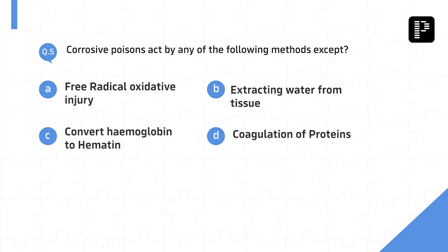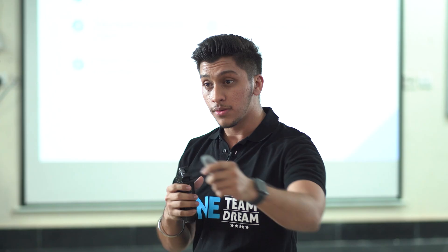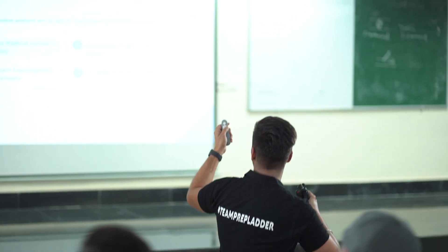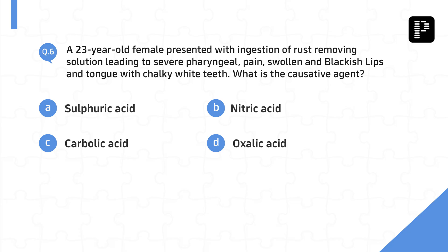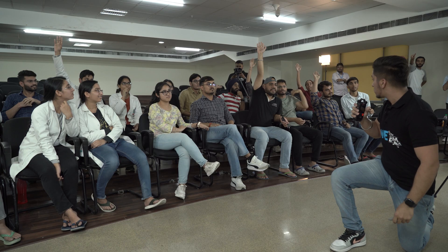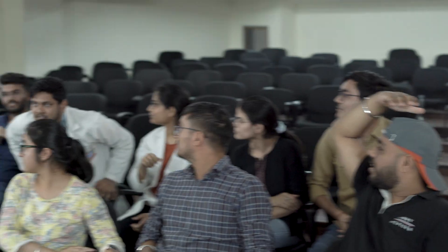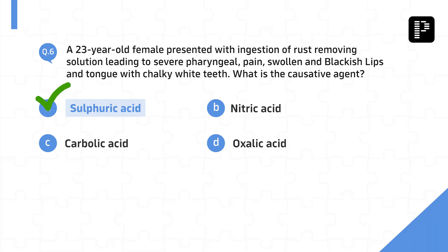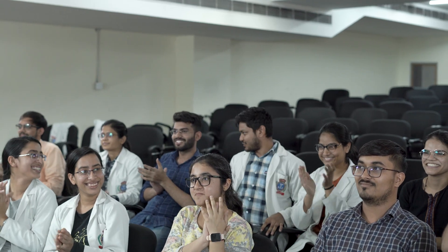Corrosive poisoning acts by any of the following methods except — C, converts hemoglobin into hematin. Answer is wrong. Confidence matters, please appreciate. Next question: a 23-year-old female presented with rush-removing solution leading to severe pharyngeal pain, difficulty swallowing, blackish lips, and chalky white teeth with discolored tongue. What is the causative agent? Clap everyone! We have one more qualifier.